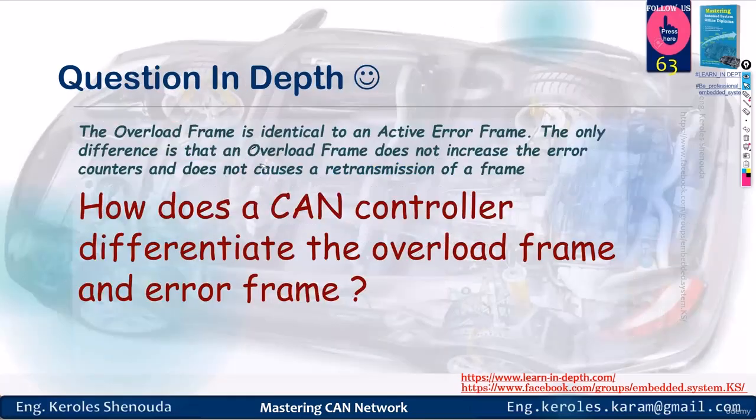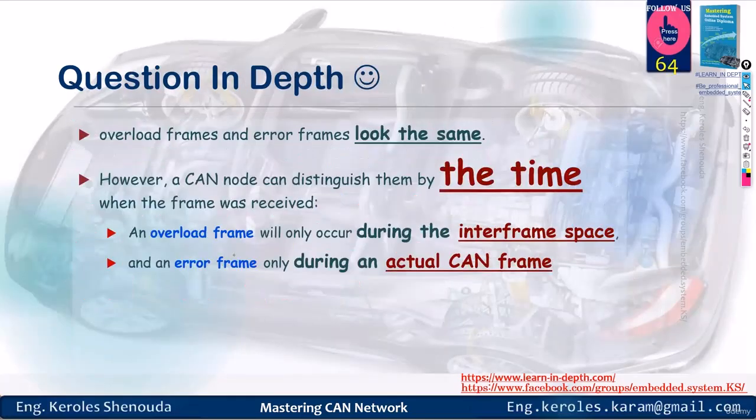Here's the trick: the CAN bus has a very powerful trick up its sleeve. The overload frame and the error frame look identical. However, the CAN node can differentiate them based on timing.